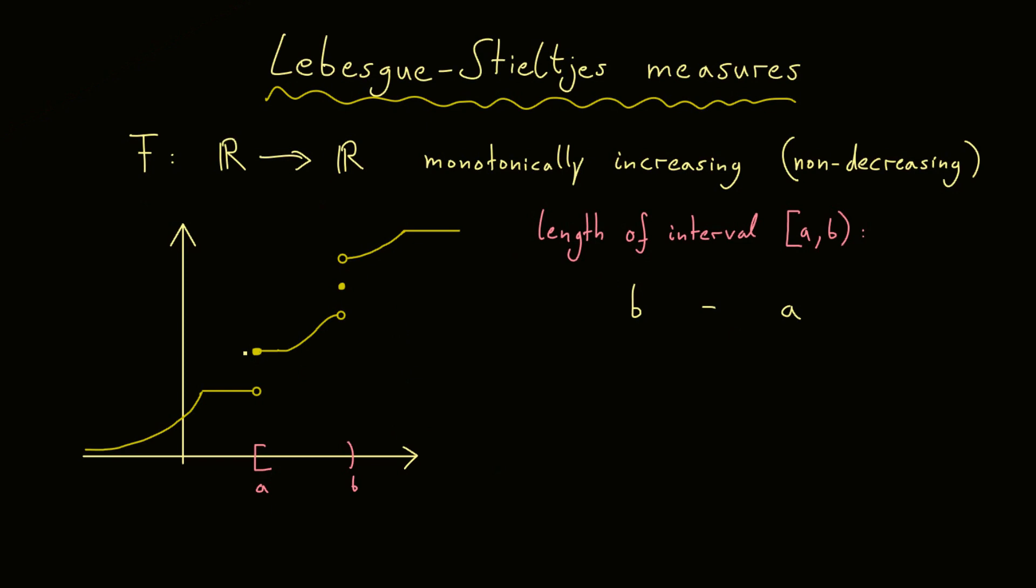But here I want that F as a function scales the length of this interval. This means that the length should be longer where the increase of the function is stronger. Therefore, we have to look what the function does with the interval. So we look at the image of the interval under the function F. In the picture, this would roughly look like this. So we have a point F(b) here and F(a) here. Scaling the length of this interval with the function F now just means we look at the y-axis here, which means the length of this interval, which is just F(b) minus F(a).